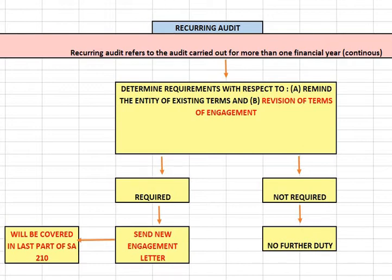I have already given this example in previous discussions, but I will repeat it once again. So there is a chartered accountant by the name CA-A, and he has been offered an audit for the continuous second time by his client A. Limited. For the financial year 2018-19, CA-A was appointed and he carried on the audit for A. Limited.